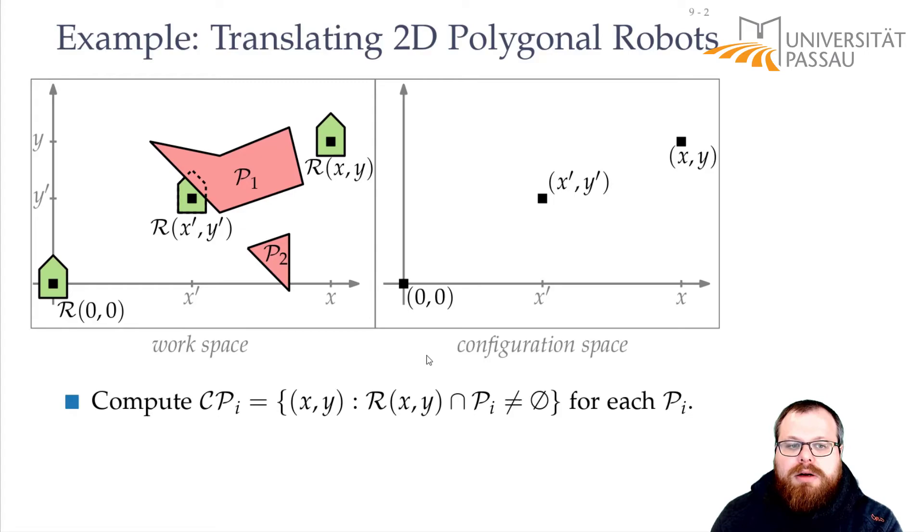So in this example here, this will be this orange region for polygon 1, and this orange region for polygon 2. As you can see, if we place the robot here, then we have an intersection, so this has to lie in the configuration polygon.